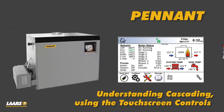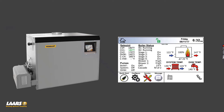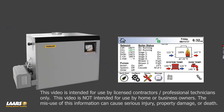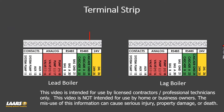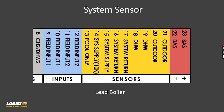Understanding cascading of the Laars Pennant controls — we can cascade up to eight Pennant boilers. First, confirm that the wiring from your lead to lag boilers has been completed. Next, also confirm that your system sensor has been installed on your lead boiler only.